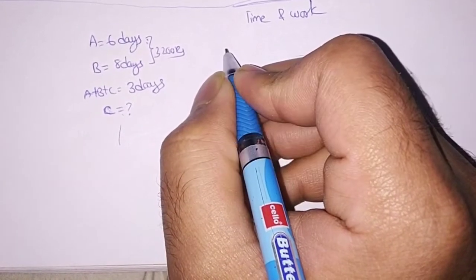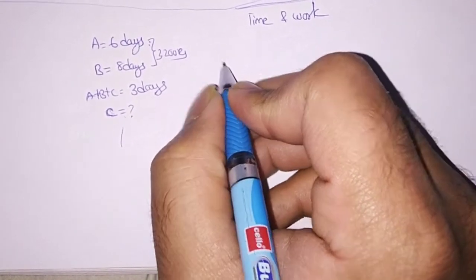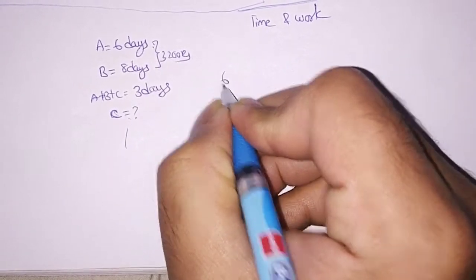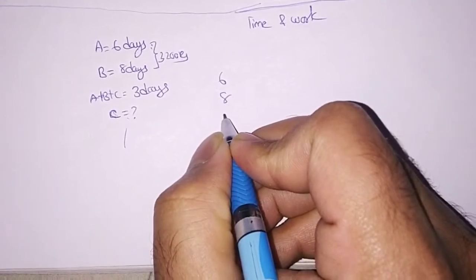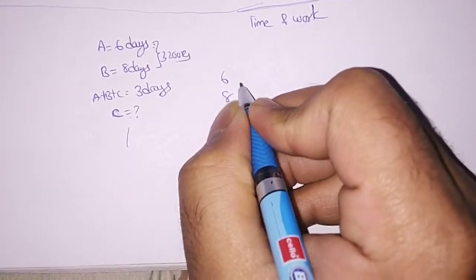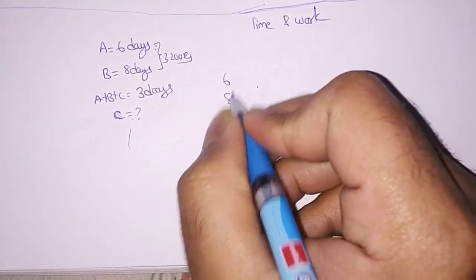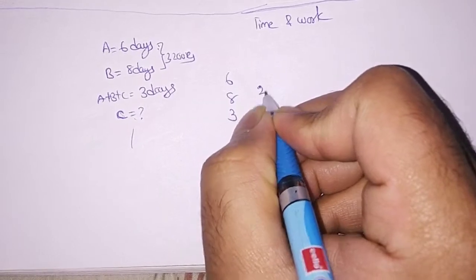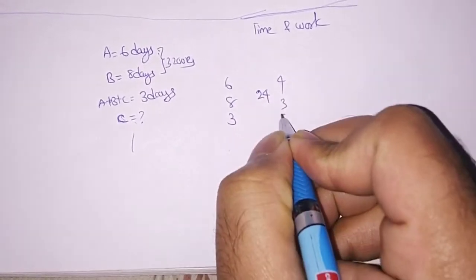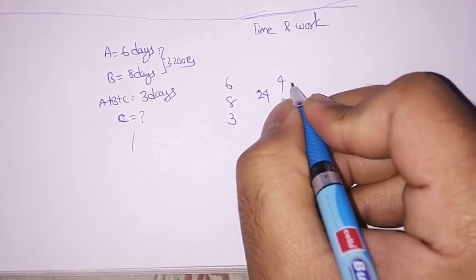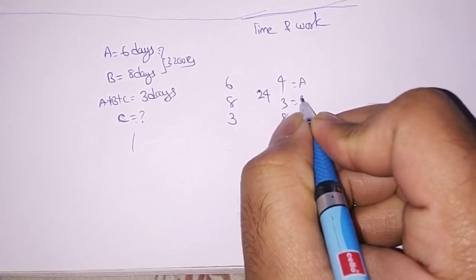In a simple way, this is the shortcut to solve the problem. So let us see how it works: 6 days, 8 days, as you know the time and work shortcuts and the common LCM is 24, 4, 3, 8 and this is A, this is B.